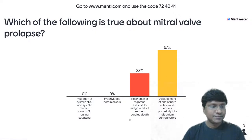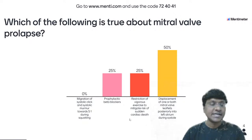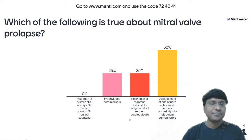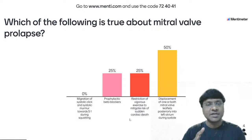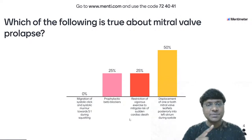The correct answer is displacement of one or both mitral valve leaflets posteriorly into the left atrium during systole — the fourth option. For the first option, during squatting the venous return increases, and the migration of systolic click and systolic murmur will be away from S1 when venous return increases. So the first option is incorrect.